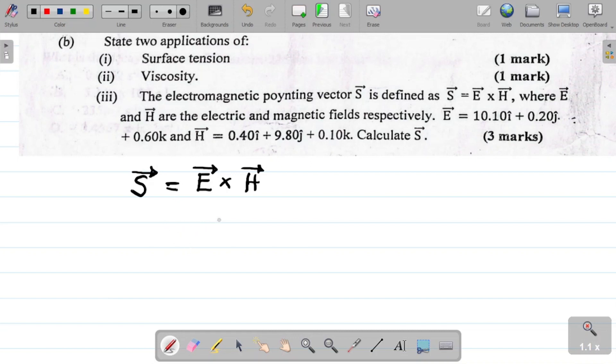The idea is very simple. For E cross H, or to get the cross product of vectors, we need to express them in matrix form. Expressing them in matrix form, my first task would be to write i, j, and k. So I'll have i, j, and k.